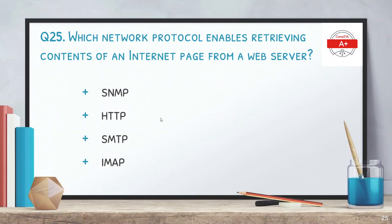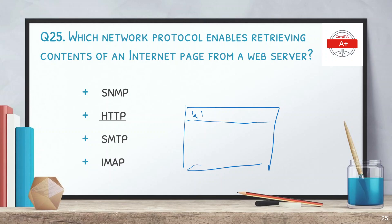The last question: which network protocol enables retrieving contents of an internet page from a web browser? The options are SNMP, HTTP, SMTP, and IMAP. The answer is HTTP. When we use our browser and type HTTP (or now more commonly HTTPS) with a URL like www.google.com, the web page is retrieved using HTTP.